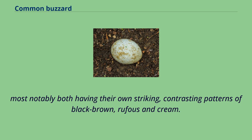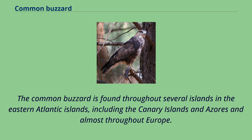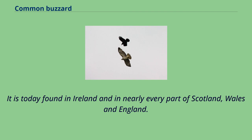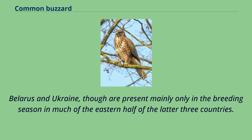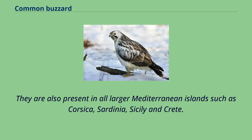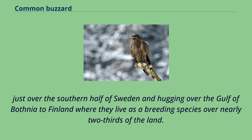The common buzzard is found throughout several islands in the eastern Atlantic, including the Canary Islands and Azores, and almost throughout Europe. It is today found in Ireland and in nearly every part of Scotland, Wales and England. In mainland Europe, there are no substantial gaps without breeding common buzzards from Portugal and Spain to Greece, Estonia, Belarus and Ukraine. They are also present on all larger Mediterranean islands such as Corsica, Sardinia, Sicily and Crete. Further north in Scandinavia, they are found mainly in southeastern Norway, just over the southern half of Sweden, and hugging over the Gulf of Bothnia to Finland where they live as a breeding species over nearly two-thirds of the land.